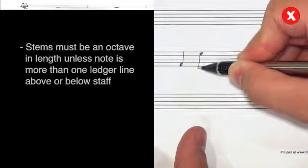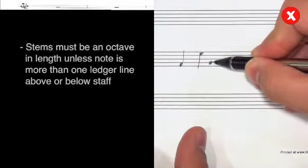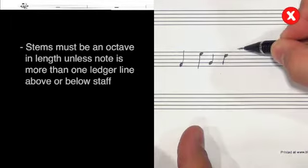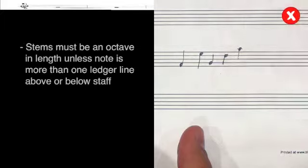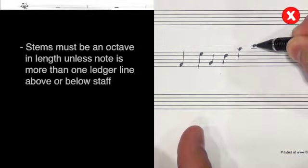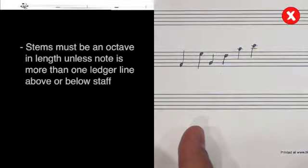The first two stems here are too long, and these ones are too short. The fifth note's stem should extend a full octave, as it is on the first ledger line above the staff. This note's stem is too short, and should extend to the center line.